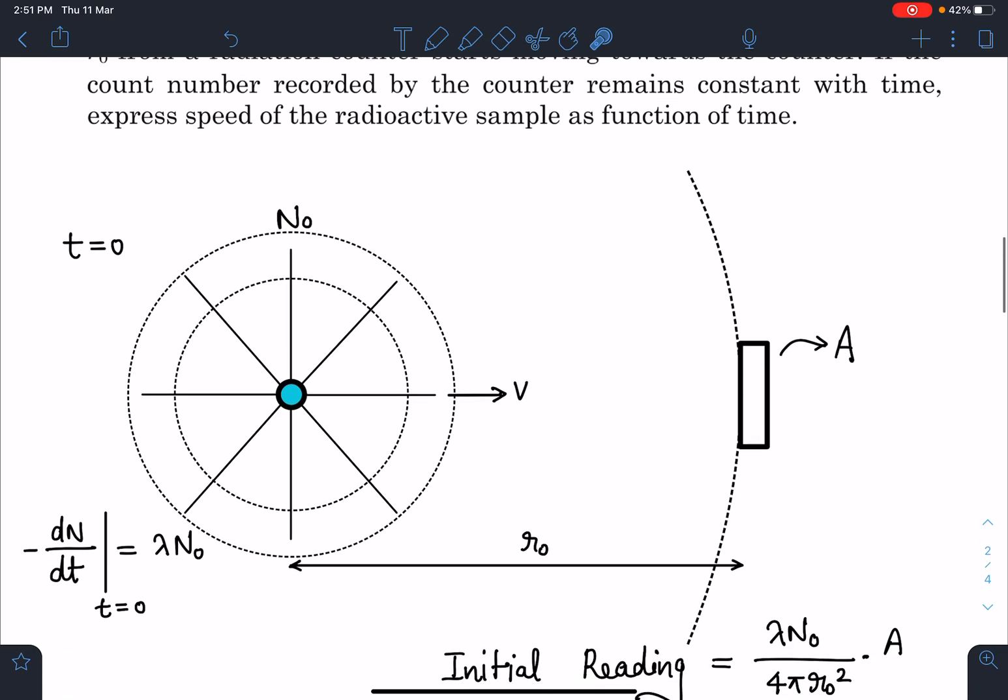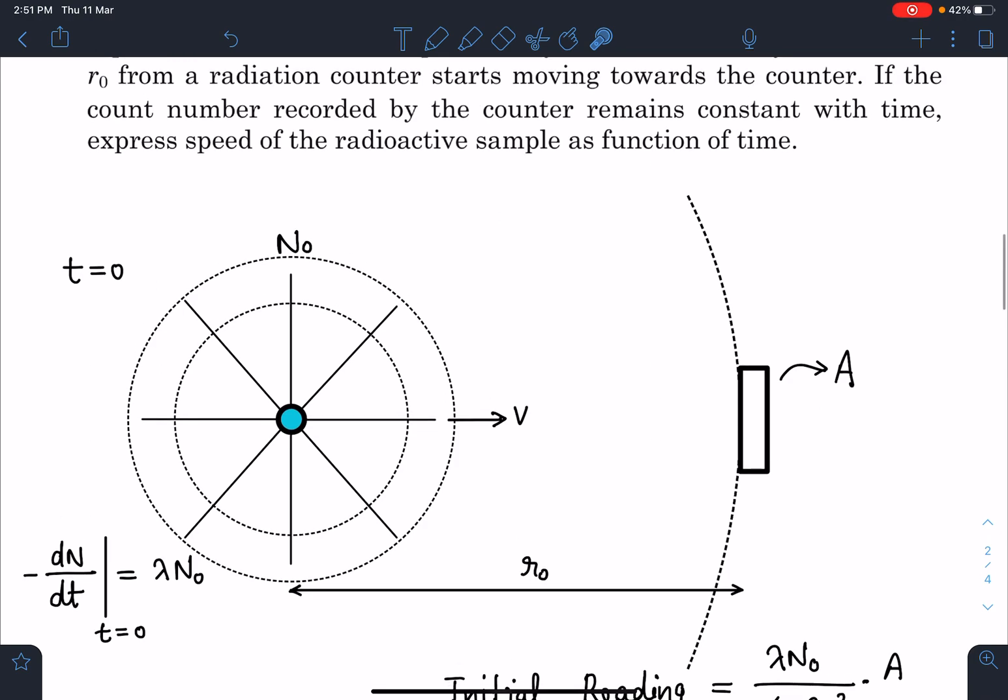Here this is the situation at t equal to 0. Let us say initially N naught number of radioactive nuclei are present and this sample point like sample is moving with a speed of V. That speed we have to vary in such a way that this recorder which will record number of decay reaching at it per second.